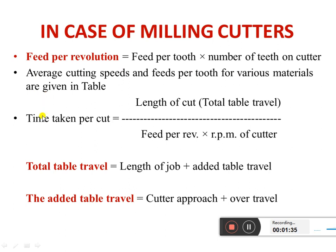The time taken per cut is equal to Total Table Travel divided by Feed per Revolution into RPM of the cutter. The Total Table Travel is equal to Length of Job plus Added Table Travel. The Added Table Travel is equal to Cutter Approach plus Over Travel.